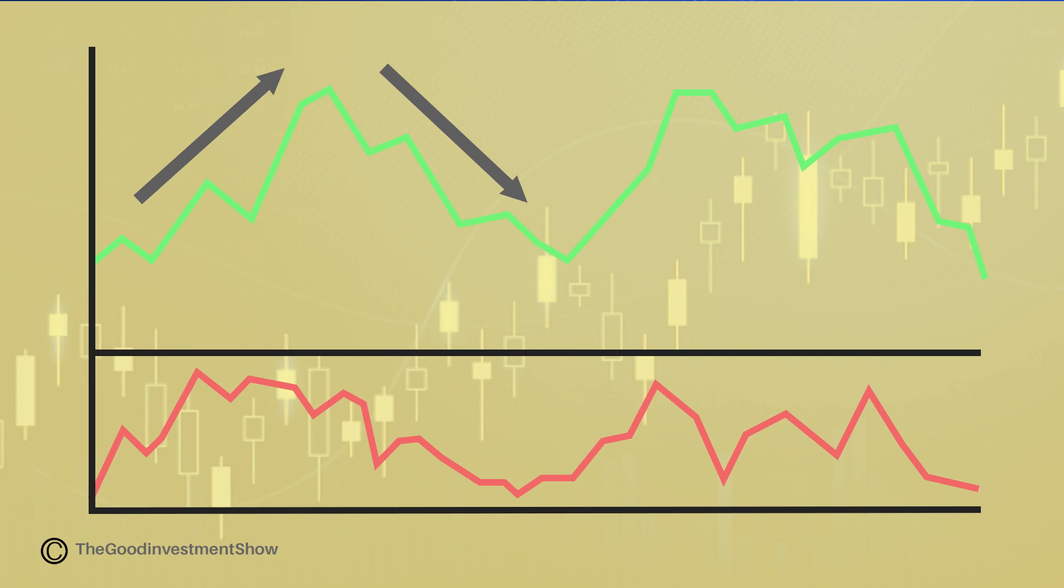After spotting a bearish divergence, an investor may use a crossback below 70 as an exit signal. Using RSI to spot divergences and identify potential oversold and overbought conditions can help investors find potential trading signals.